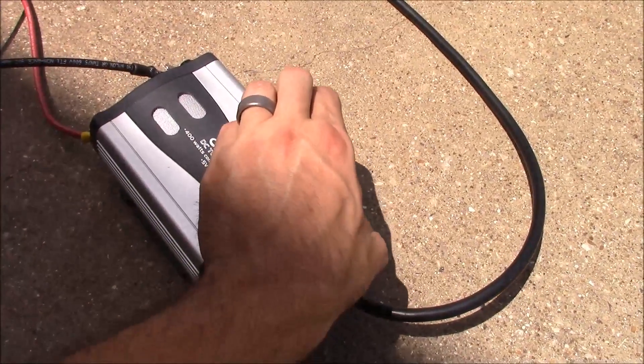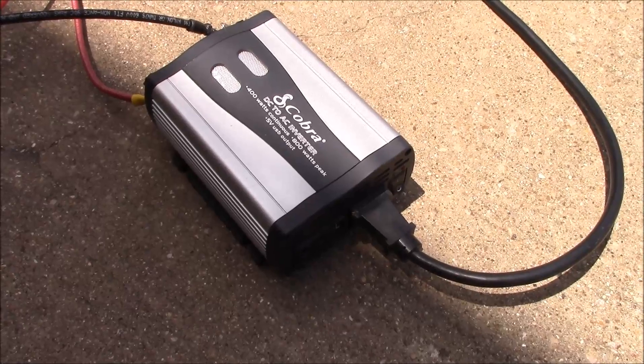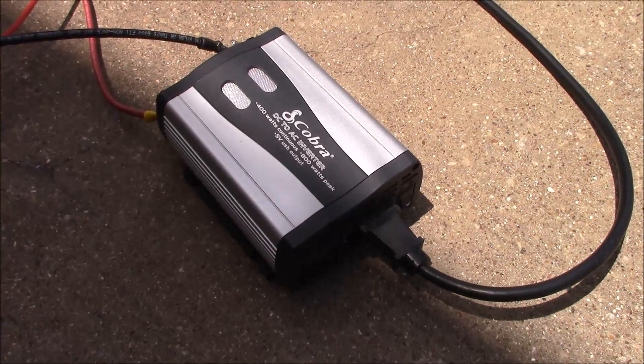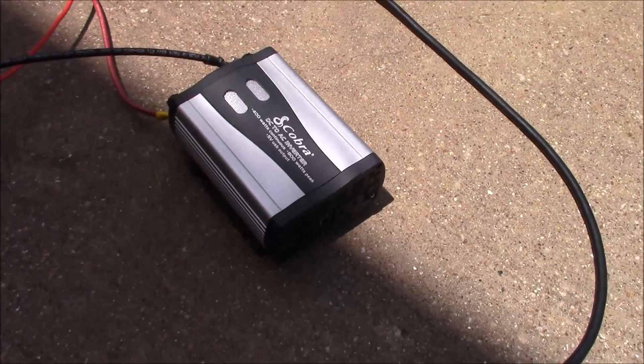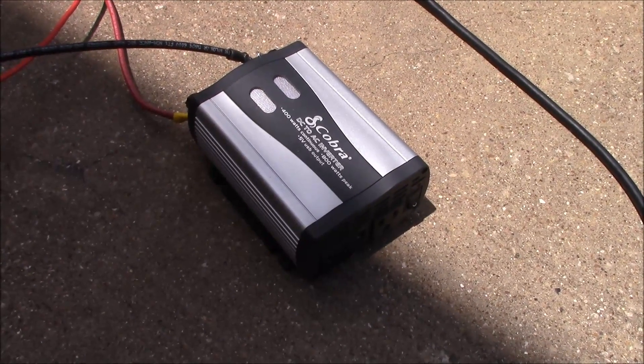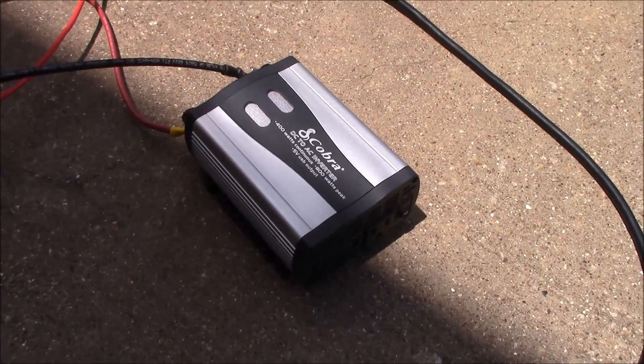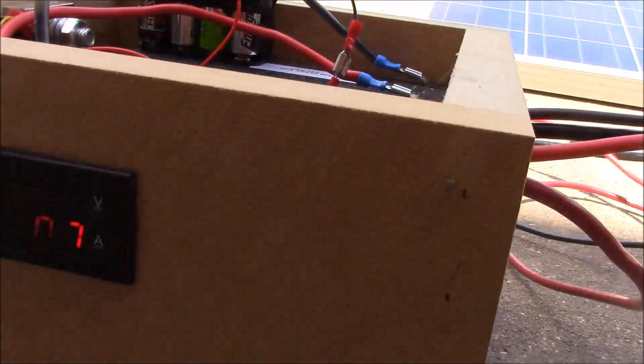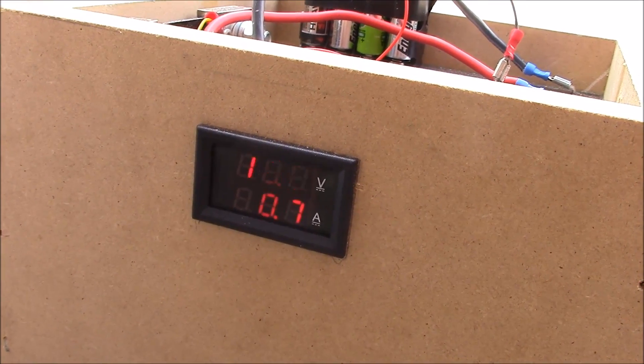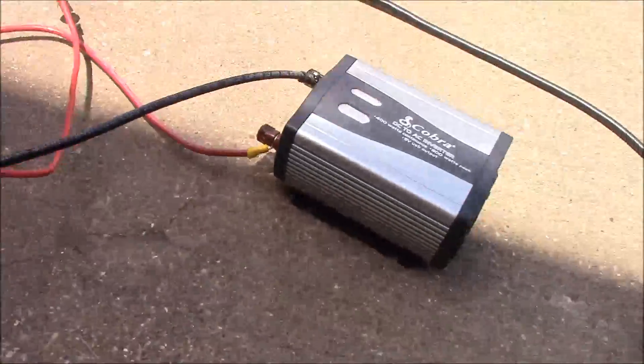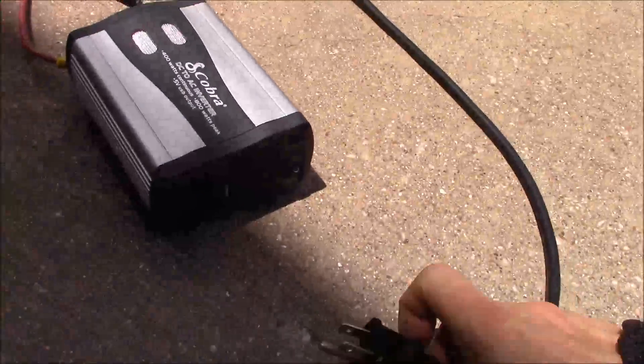Okay, here we go. Alright, so the inverter's on, no problems, no alarms or anything like that. And it is pulling, I don't know if you're going to be able to see that, but it's pulling 7 tenths, 6 tenths of an amp of current. So let's see what happens when we plug in this refrigerator.